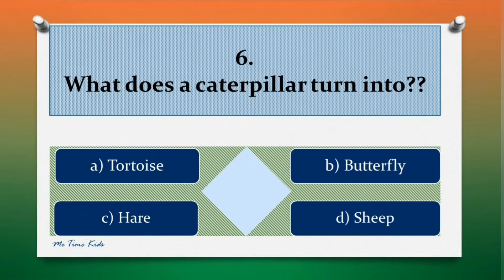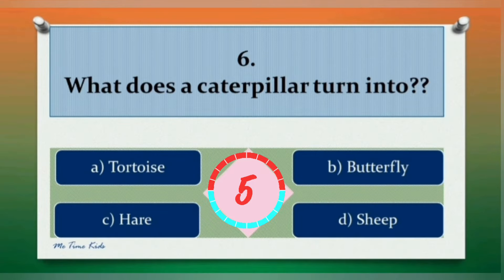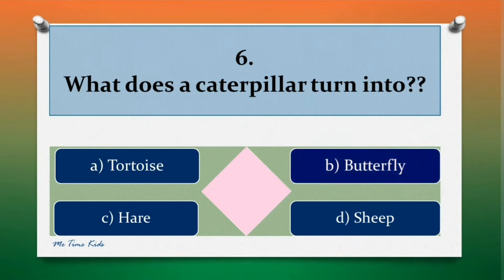Question 6. What does a caterpillar turn into? Options are: a. Tortoise, b. Butterfly, c. Hare, d. Sheep. Correct answer is b. Butterfly.